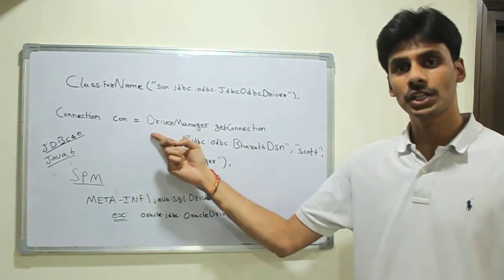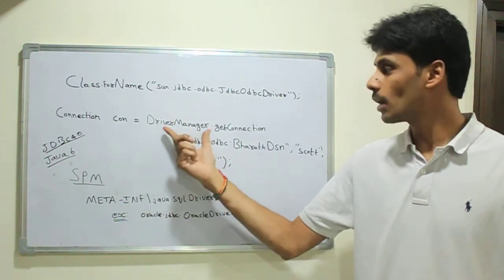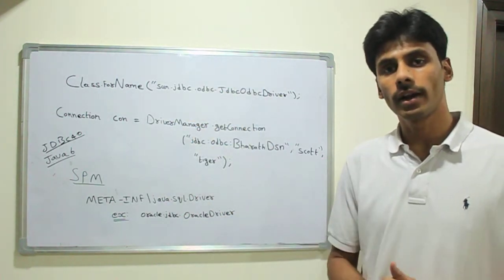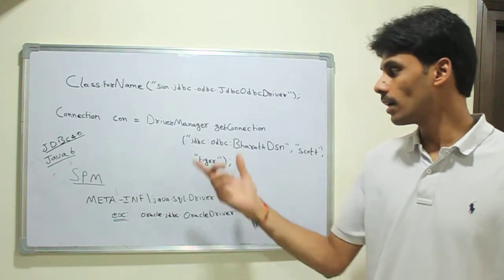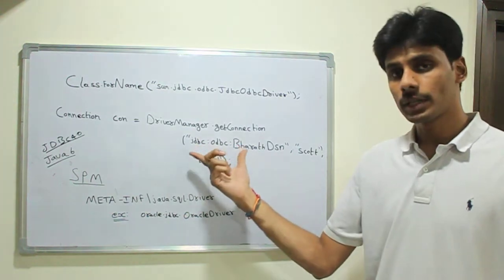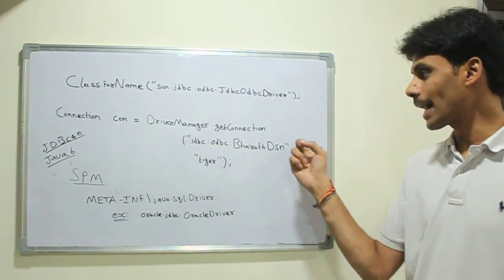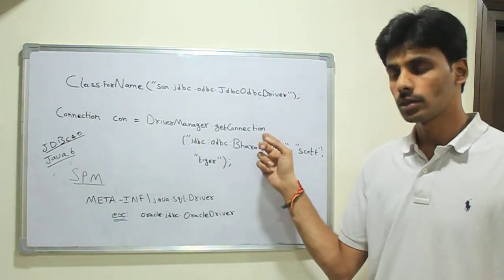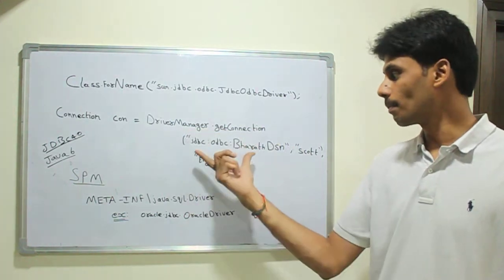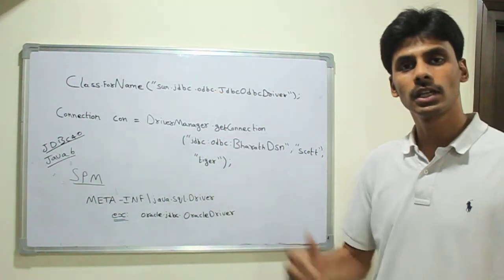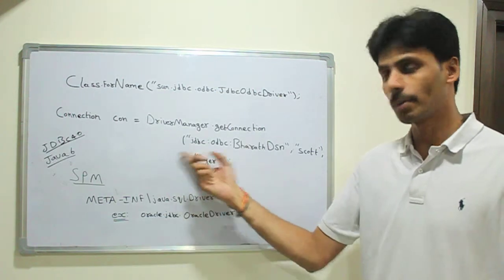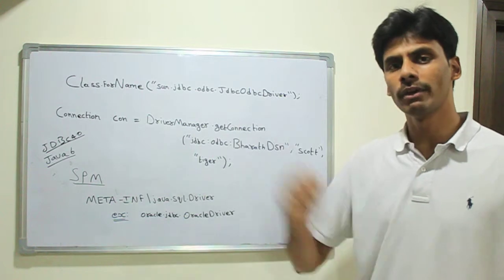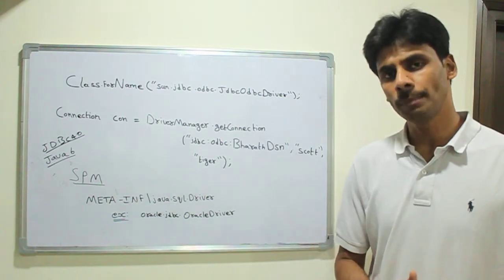In the next step, when you create a connection, the driver manager knows all the drivers that have registered with it. It will check which driver can accept the URL string you are passing to getConnection(). The driver manager will pass the string to each of the drivers that were loaded and registered with it. Whichever driver accepts that string, it will use that driver to connect to the database.